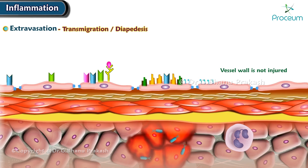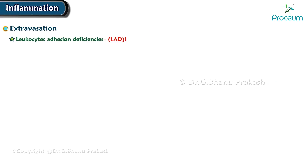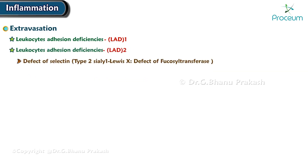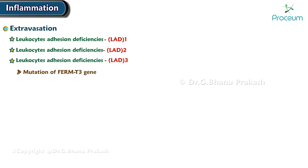Next, we address adhesion deficiencies in leukocytes. Leukocyte adhesion disorder, or LAD-1, occurs in beta-2 integrins LFA-1 and MAC-1, and is characterized by recurrent bacterial infections and delayed separation of the umbilical cord stump. LAD-2 occurs in the selectin ligand sialyl-Lewis-X and is caused by a defect in fucosyltransferase. LAD-3 is due to mutation of the FERMT3 gene, resulting in impaired integrin activation.